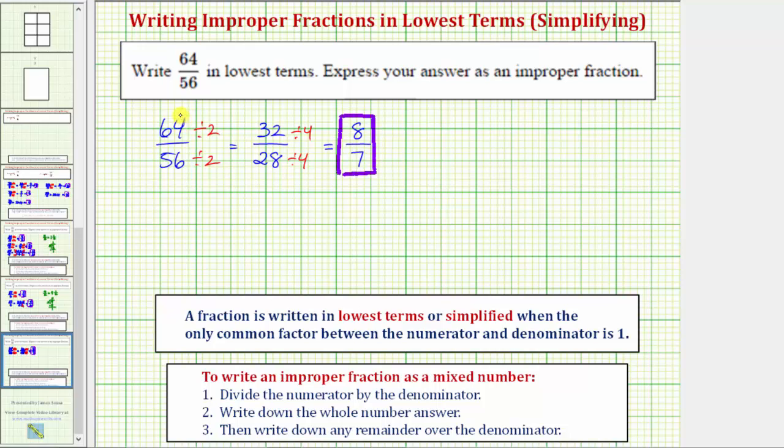Because 64 and 56 were divisible by 2 and 4, the greatest common factor of 64 and 56 is 8. So we could have also simplified the given fraction in one step by dividing both the numerator and denominator by 8. 64 divided by 8 is 8, and 56 divided by 8 is 7.